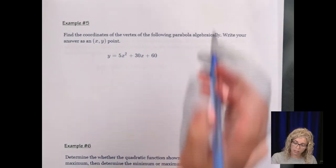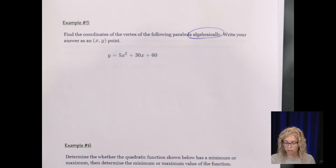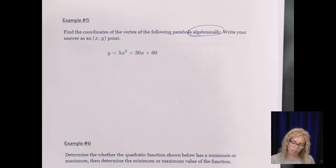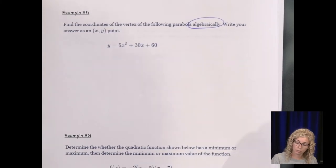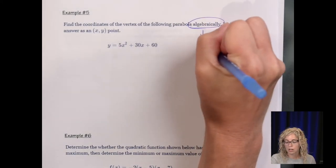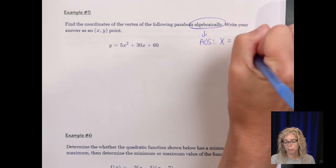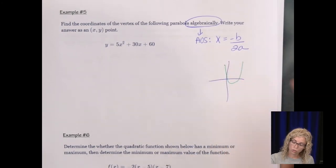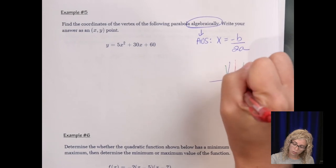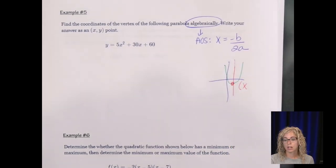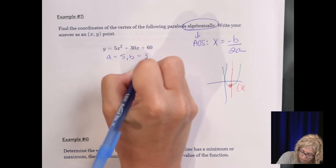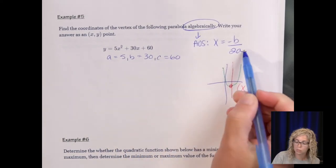Number 5. Find the coordinates of the vertex algebraically. So what we're going to do is use the axis of symmetry formula. We could also put it in vertex form, but I think this is a good review. And I'm going to use AOS for the axis of symmetry formula, which is X equals negative B over 2A. Because in any parabola, the axis of symmetry always goes through the vertex. So that'll tell you what your X is. And then you just plug X in to find Y.